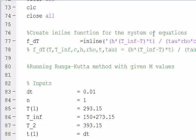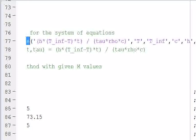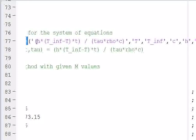So if you create an inline function, you only have to modify the equation in one spot rather than having to change it multiple times in your script. So this equation, F underscore DT, using it uses the inline function as a MATLAB function. And then the equation is here.